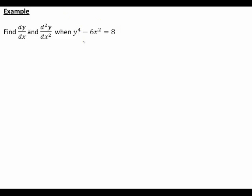Now you might initially think, why don't we just rearrange this to make y the subject? We could get y to the 4 equals 8 plus 6x squared. Trouble is, y would then be plus or minus 8 plus 6x squared to the 1 quarter, which can get a bit more messy to differentiate. So that's why instead of doing that, we're going to use implicit differentiation here.